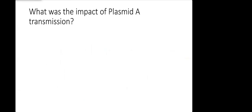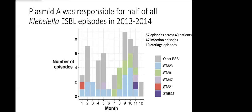What was the impact of plasmid A transmission across the study? Here I have a bar chart showing the total number of ESBL episodes that have occurred per month during the study. We had 57 ESBL episodes across the whole study period. Twenty-three of those were due to ST323. However, if we then add in all of the additional ESBL episodes that were caused by strains acquiring plasmid A, we now have 53% of all of the episodes.